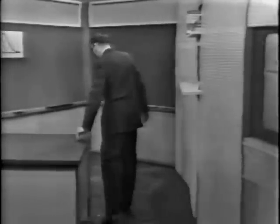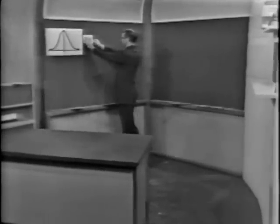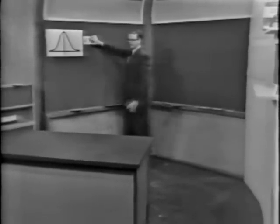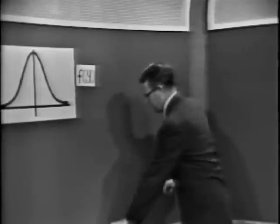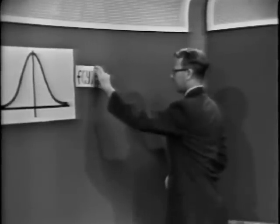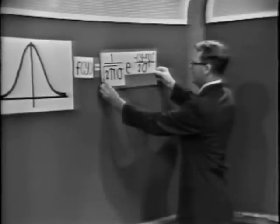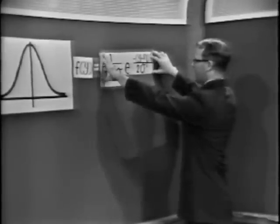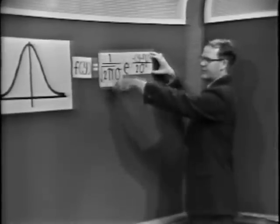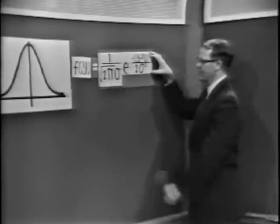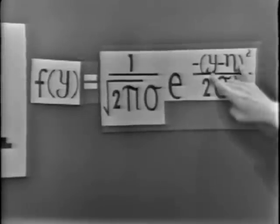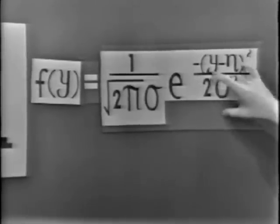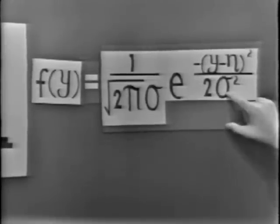Now let's take a look at the mathematical function which relates to the normal distribution. F of Y — that's our frequency function — is equal to 1 over the square root of 2π sigma. This is the constant, incidentally, which makes the area under that curve equal to 1. Then e to the minus quantity Y minus eta, quantity squared, divided by 2 sigma squared.